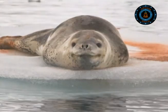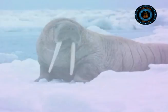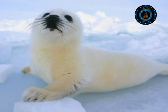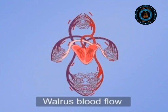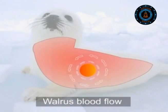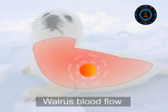Seals and walruses also have blubber, but unlike land animals, they have an extra insulating feature. By changing their blood flow, they can keep their blubber layer cool while maintaining a warm temperature deep inside their body.